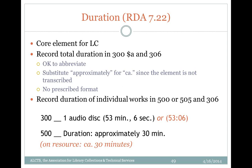Duration is a core element for LC. Recording duration has been greatly simplified from AACR2. We should record total duration now in 300 subfield A for all materials, not just when there was a single work on the recording. It's okay to abbreviate hours, minutes, and seconds; however, use 'approximately' instead of 'ca.' since this element is not transcribed. Duration of individual works or parts are additionally recorded in either 500 or 505 contents note fields, and you can also give duration in coded form in a 306 field.